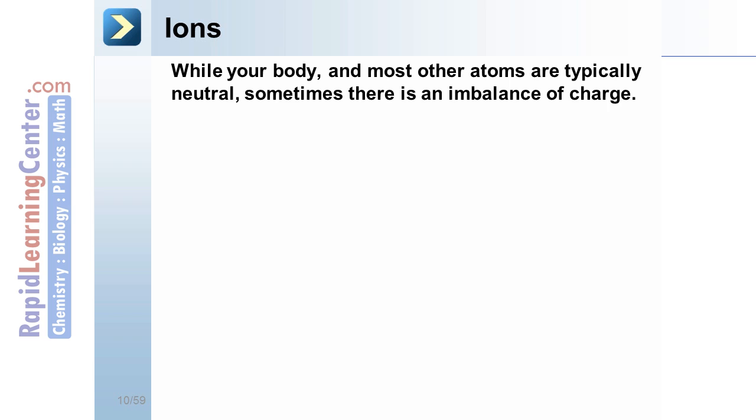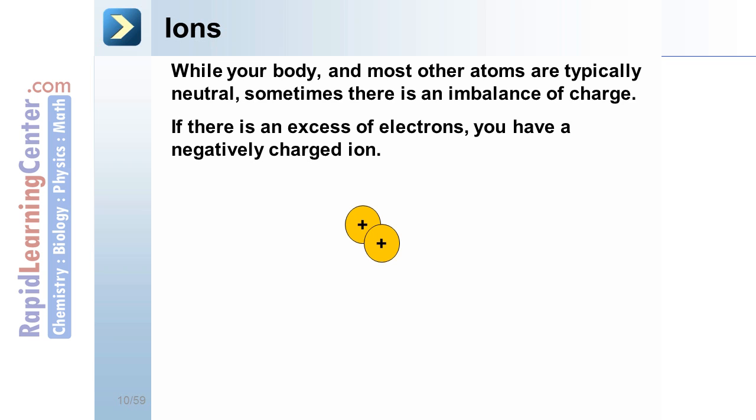Ions. While your body and most other atoms are typically neutral, sometimes there is an imbalance of charge. If there is an excess of electrons, you have a negatively charged ion. In this example, we have one more electron than protons. This atom would be a negative ion.